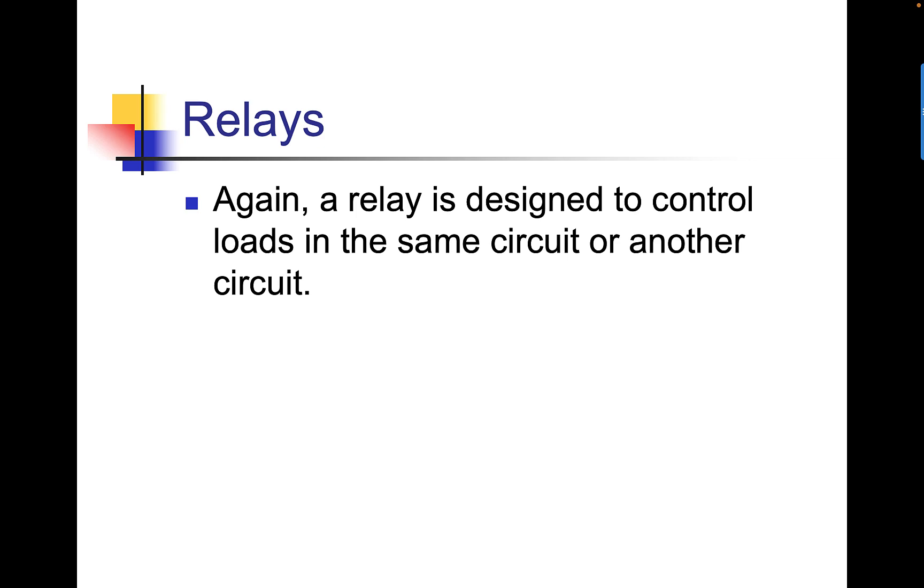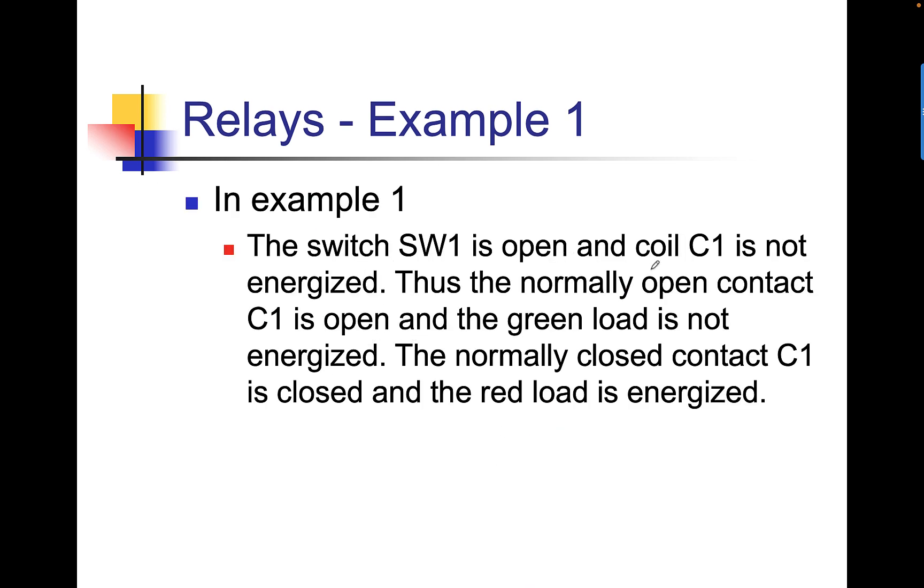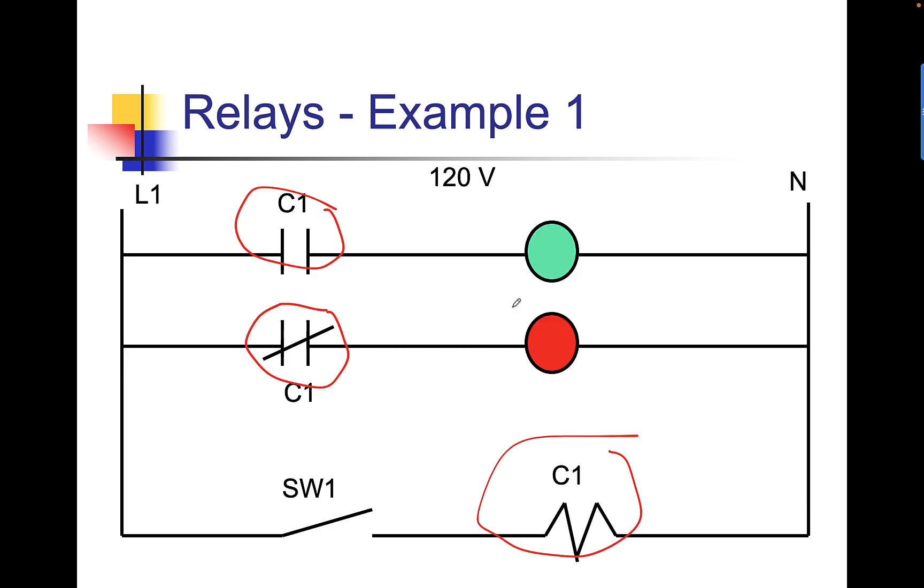Here we have a relay, example 1. We have a switch down here. Our relay coil is here. The C1 with the slash is normally closed. C1 by itself is normally open. These are your symbols. In this example, switch 1 is open, and the coil C1 is not energized. Thus, the normally open contact C1 is open, and the green load is not energized. The normally closed contact C1 is closed, and the red load is energized. C1 coil not energized because of the open switch. C1 normally closed is allowing current to the red bulb. C1 normally open is blocking current from the green bulb.